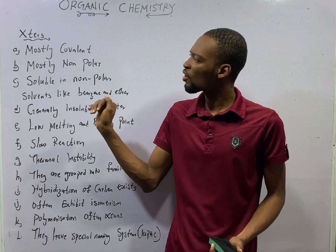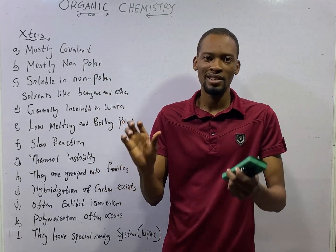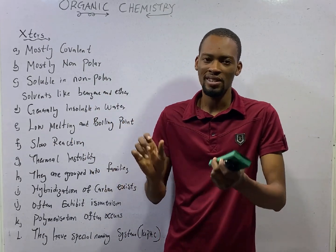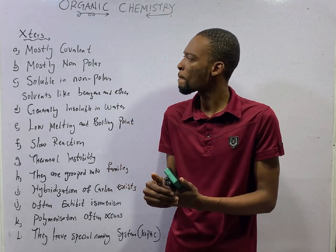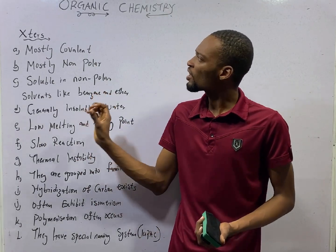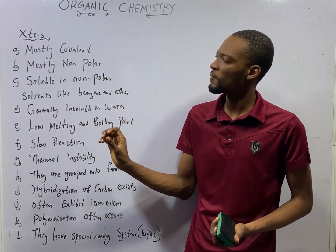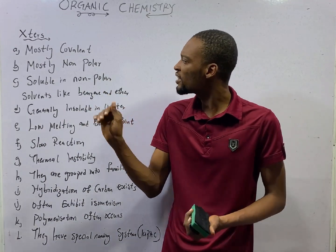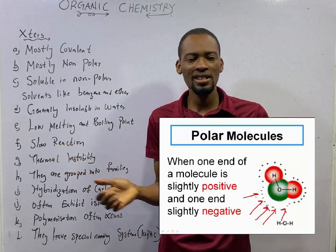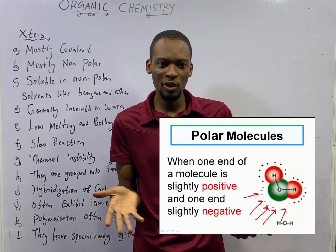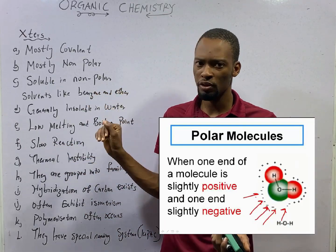Most organic compounds are covalent, and therefore they have to do with sharing of electrons. The second characteristic of organic compounds is that they are mostly non-polar.